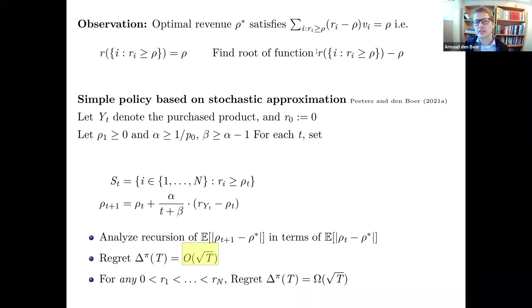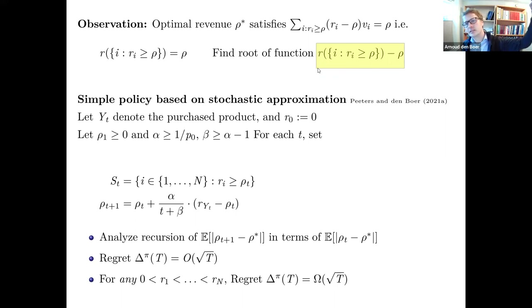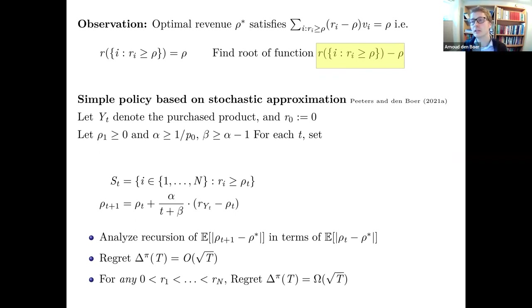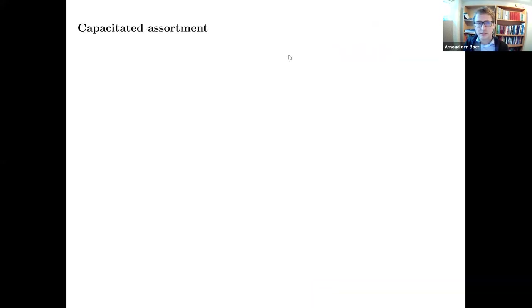Intuitively, when N is very large there are many products but most don't matter — only those near the root of the fixed-point equation matter. You can add many dummy products to the left or right that have no influence on the solution. That's the uncapacitated assortment problem, solvable by standard stochastic approximation to find the root of a function.